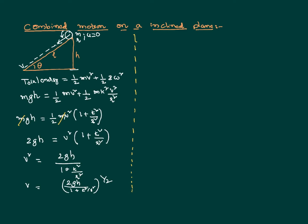Now we are interested in calculating the acceleration acquired by the body by the time it has reached the bottom. We use the kinematic equation v² = u² + 2as, so v² equals 2gh divided by (1 + k²/r²). Here v is the velocity as it has reached the bottom, which we have just calculated.